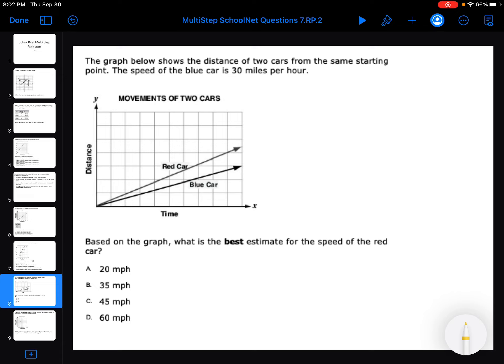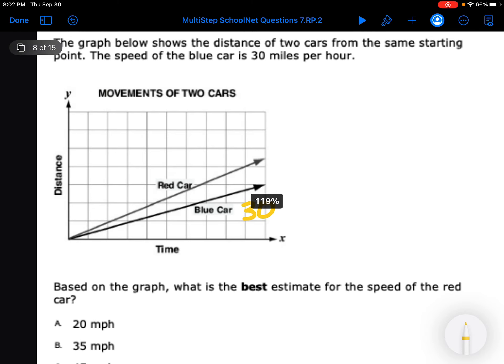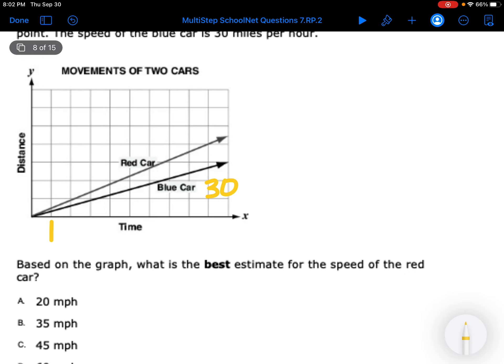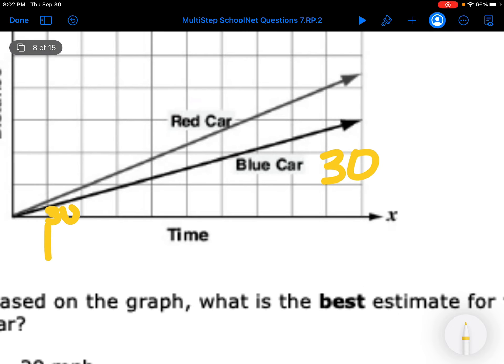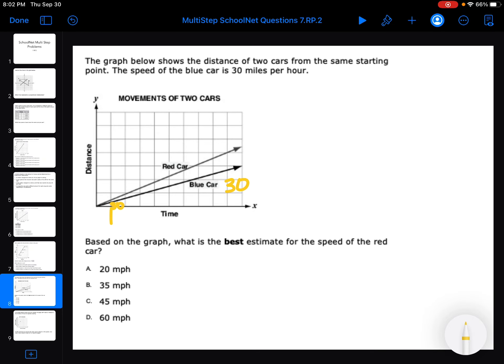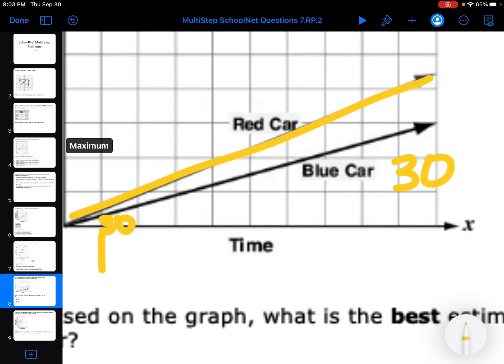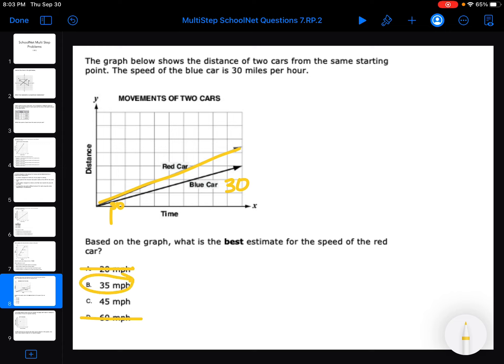The graph below shows the distance two cars from the same starting point. The speed of the blue car is 30 miles per hour. So in one hour, he's gone 30 miles. So based on the graph, what's the best estimate for the red car? Well, it can't be less, because the red car is definitely going faster. It can't be twice, because there aren't two blocks between. So I'm stuck between 35 and 45. Well, these lines are super close together. So I'm going with B. Because I don't think it's that much faster.